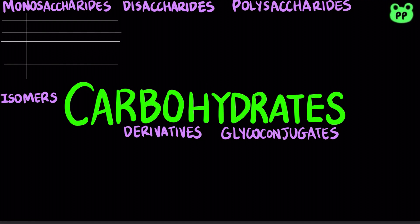Carbohydrates include sugars and the polymers of sugars. The simplest carbohydrates are monosaccharides, or simple sugars. If a sugar has an aldehyde group, it is known as an aldose, and if it has a ketone group, it is known as a ketose.